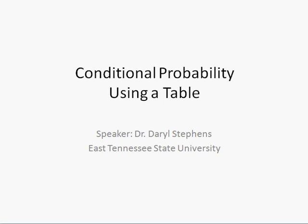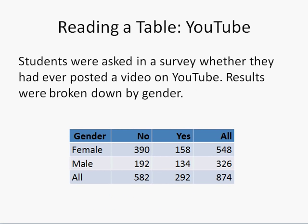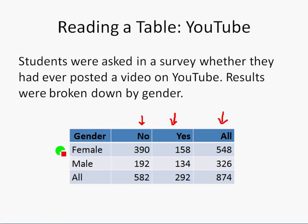We're going to begin by looking at a table that represents some results from a survey. Students were asked whether they'd ever posted a video on YouTube. We have a column for how many people said no, a column for how many said yes, and a total column. We also broke this down by gender, with a row for females, a row for males, and a total row.